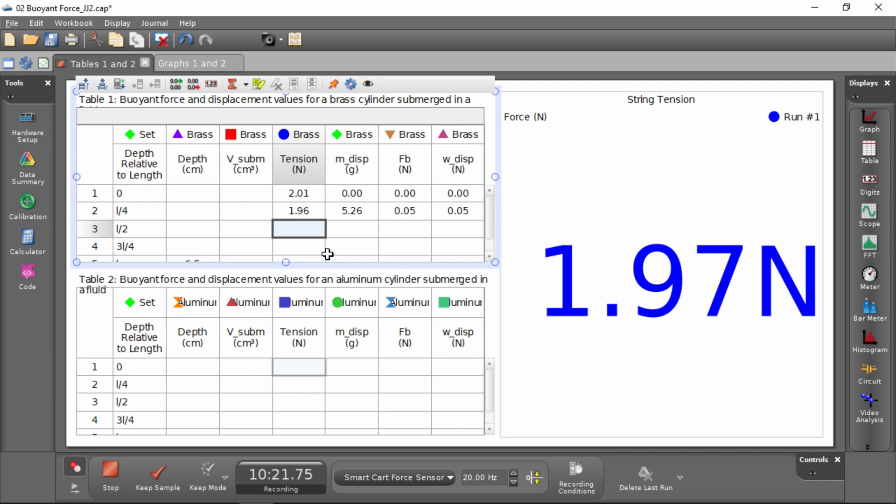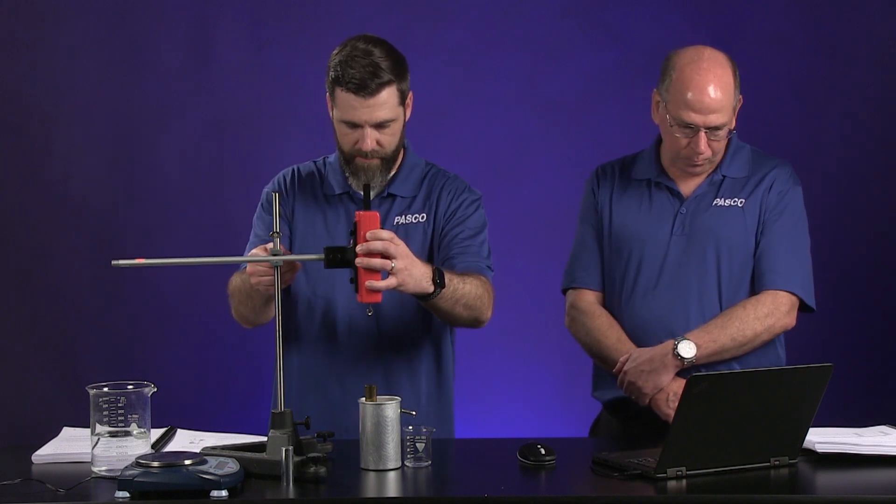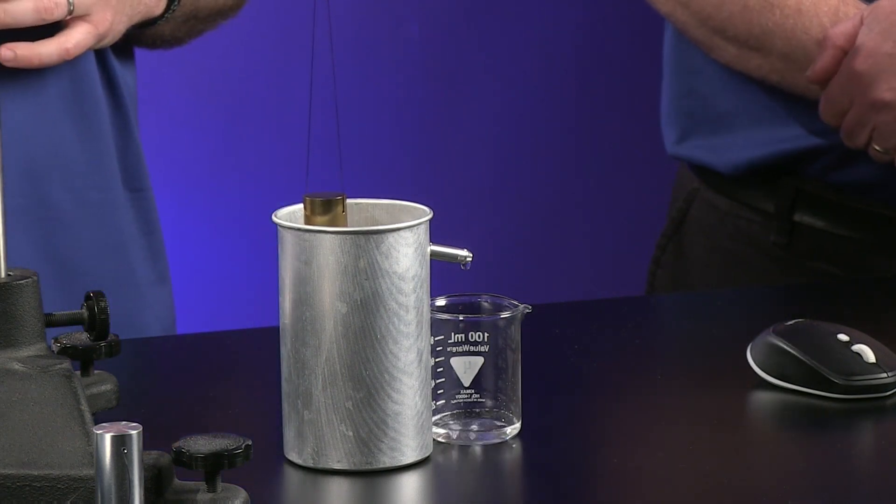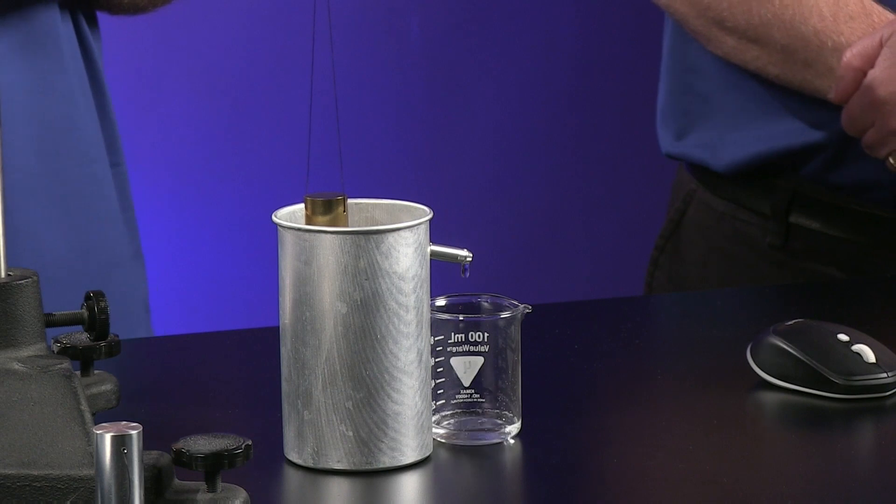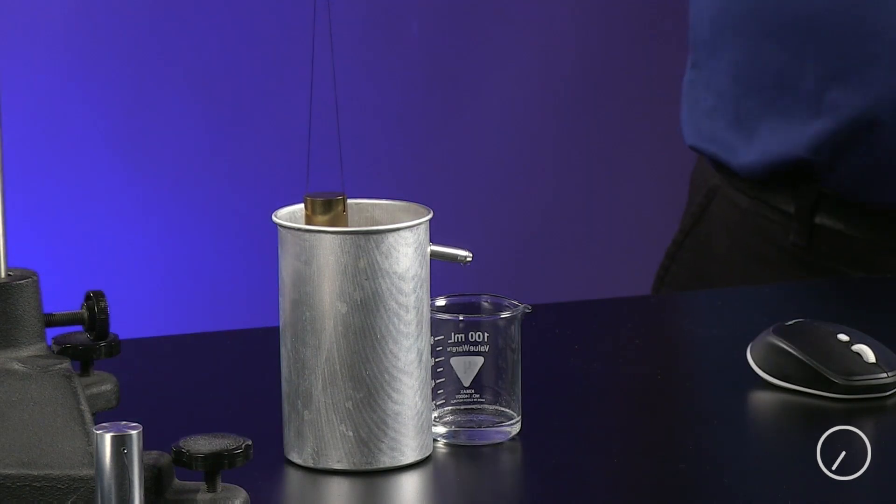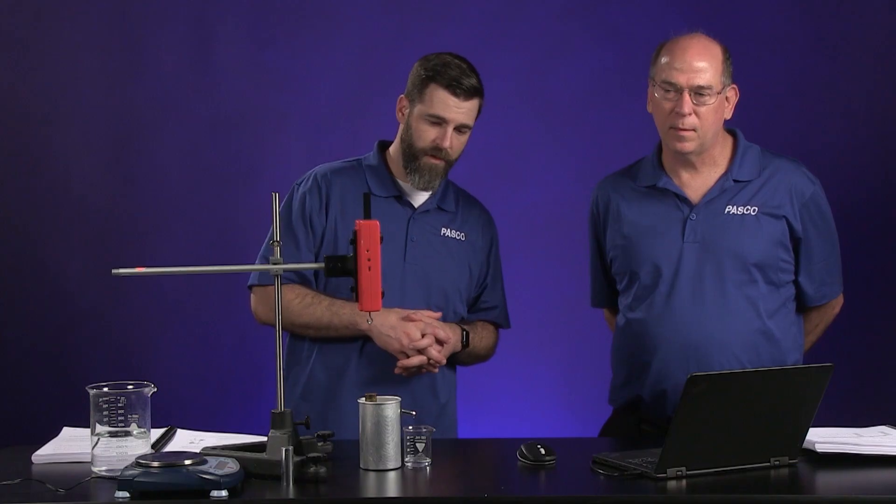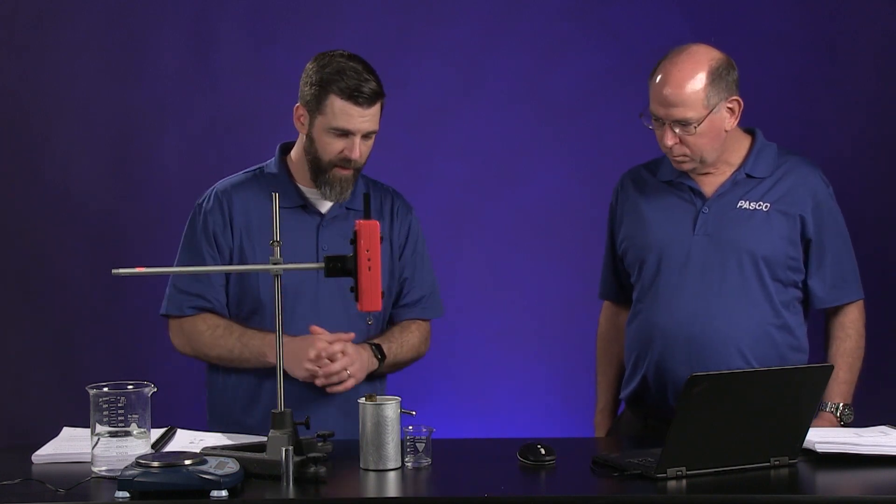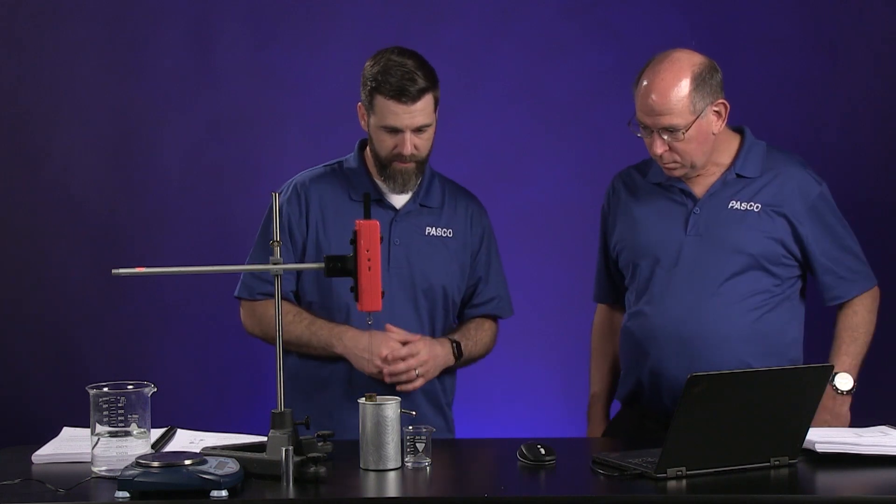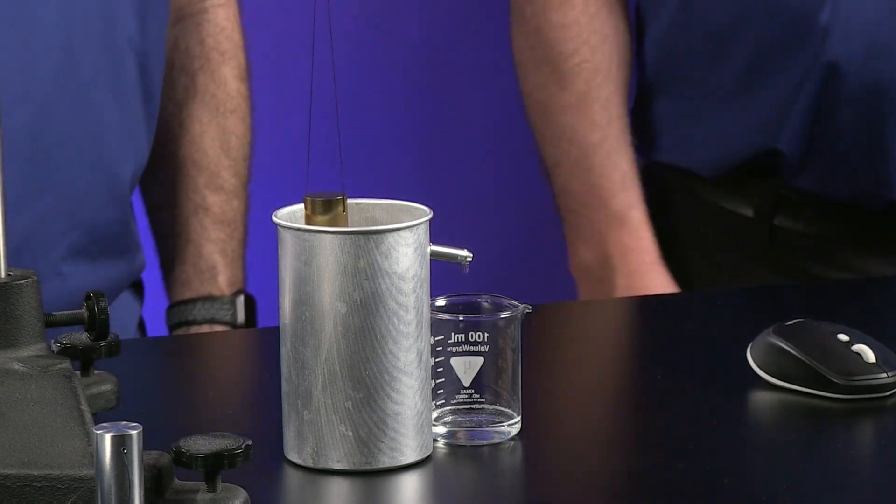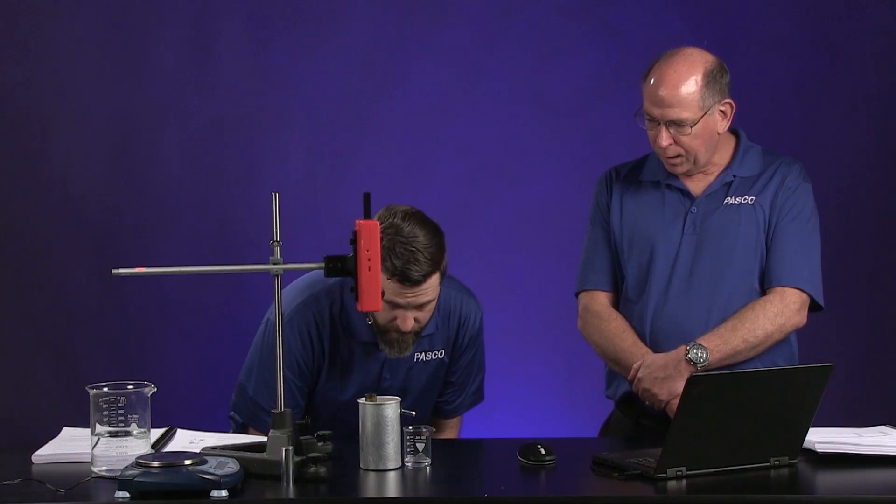And now we're ready for submerging it halfway. Loosen that, and there's halfway, and the dripping commences again. Okay, so again the dripping has slowed quite a bit. We'll maybe wait for one more drop and then make our mass measurement real quick and record our tension value. Sometimes you can speed it up by tapping it a little bit, but you don't want to upset it if you want accurate data.